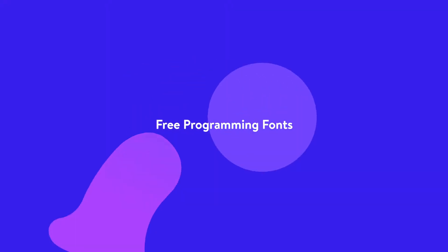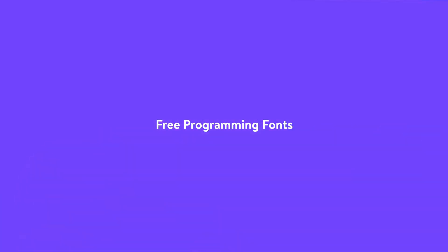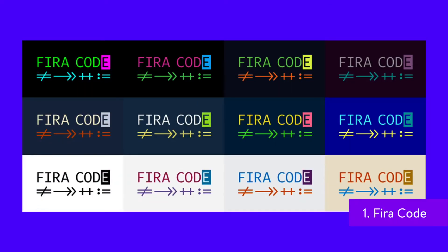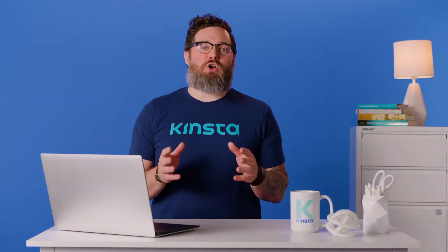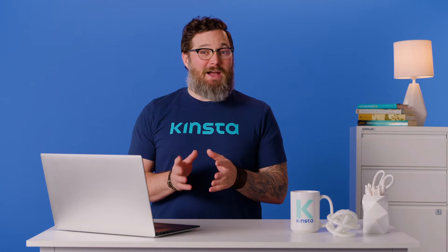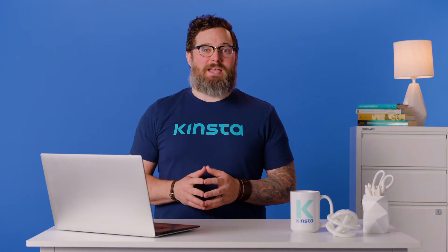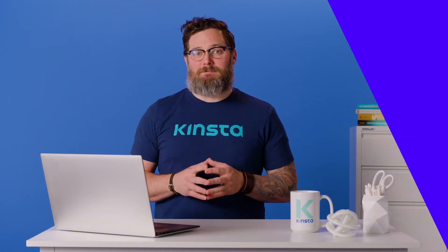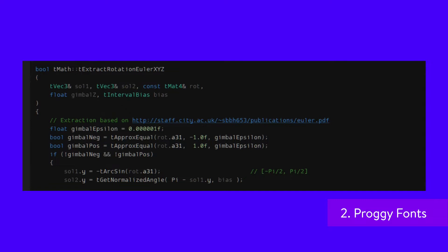The concept behind FiraCode is simple. The monospaced font is designed to combine those frequently used multi-symbol sequences into one, reducing the time it takes to scan over your code and find what you're looking for. FiraCode is supported by most browsers, and you can see how it looks in the real-world code examples they provide.